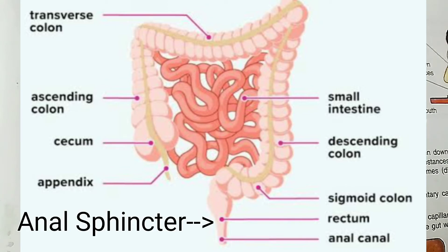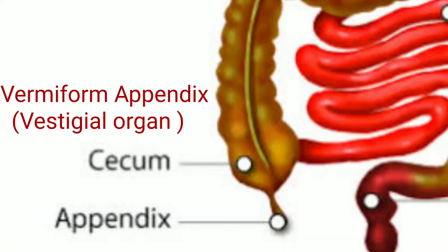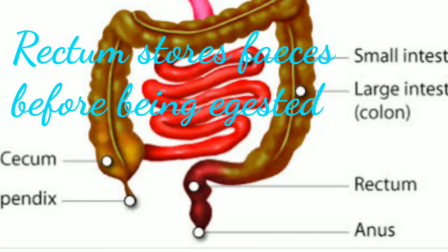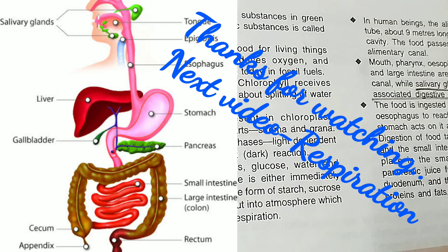The anal sphincter muscle regulates the removal of waste material. In the human alimentary system, the vermiform appendix is a vestigial organ — it was functional in our ancestors but is now functionless. In the rectum, undigested waste material is stored before being eliminated through the anus. I hope digestion in human beings is now clear. In the next video I am going to explain respiration in human beings. Till then, bye-bye, take care and wait for the next video.